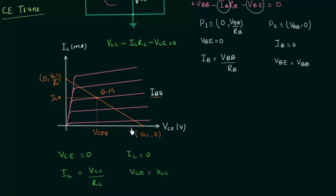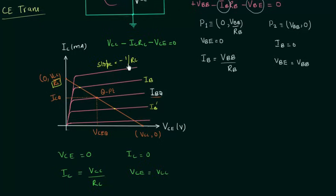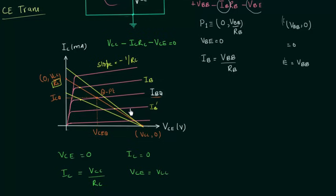You can clearly see the operating point will change if we change the base current. If we increase the base current, the operating point shifts upward; if we decrease it, the operating point shifts downward. We can also change the operating point by changing resistance RC. The slope of the output load line is −1/RC. If we increase RC, the slope decreases and the operating point shifts; if we decrease RC, the slope increases and we get a new operating point.